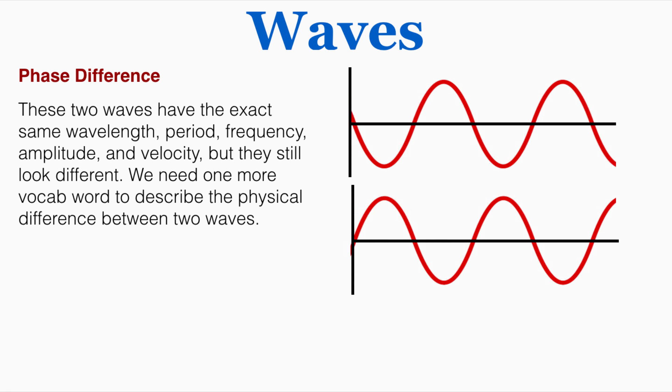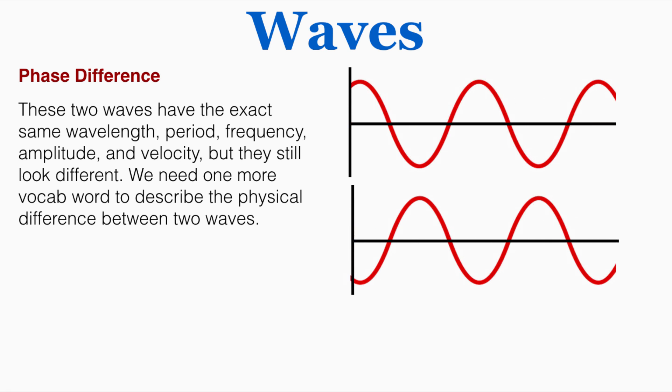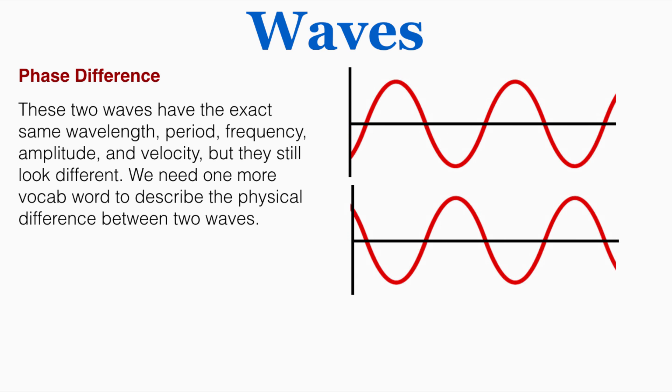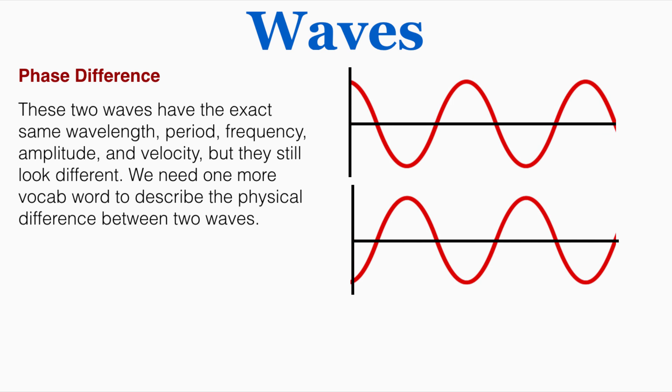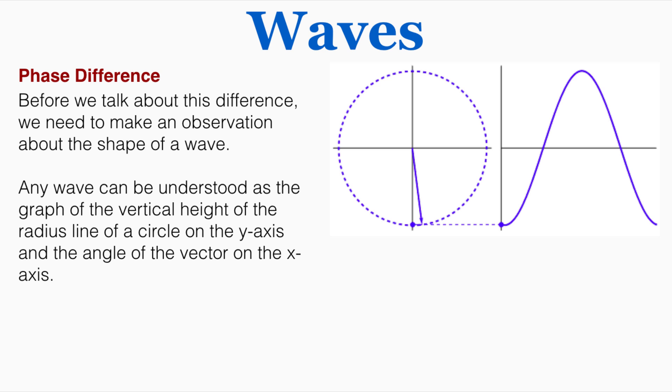So the reason why we do physics is to describe and understand the world, and if there's a part of the world that we don't have vocabulary for, like the difference between these two waves, we need to invent a new vocabulary term to describe it. Before we talk about this difference, we need to make an observation about the shape of a wave.